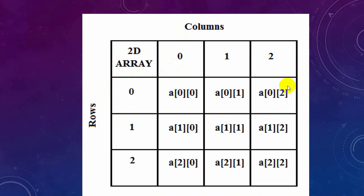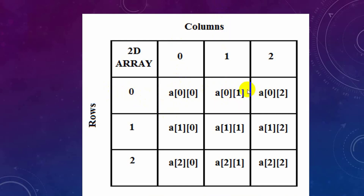First row: the first row is 0 number, and the column here is 0 number column. First column is 0 number and 0 number column. Next row is 0 number and 1 column.